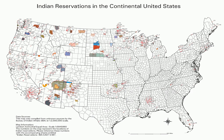An Indian reservation is a legal designation for an area of land managed by a federally recognized Native American tribe under the U.S. Bureau of Indian Affairs rather than the state governments of the United States in which they are physically located. Each of the 326 Indian reservations in the United States is associated with a particular Native American nation. Not all of the country's 567 recognized tribes have a reservation. Some tribes have more than one reservation, while some share reservations.